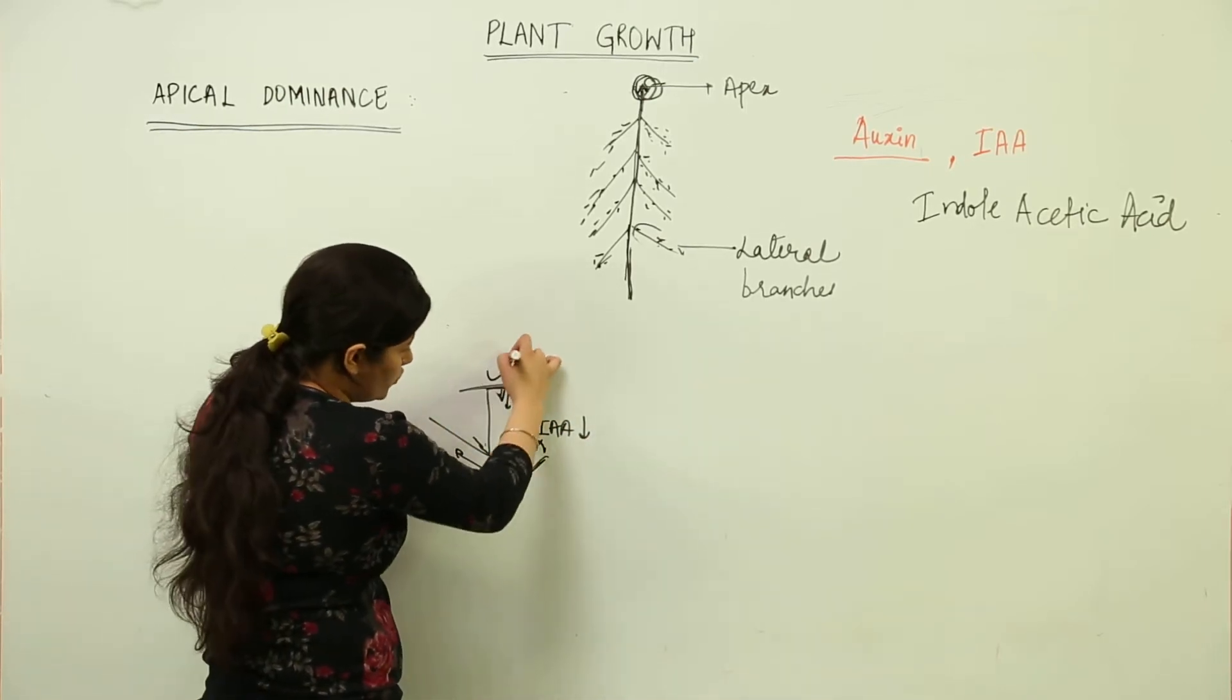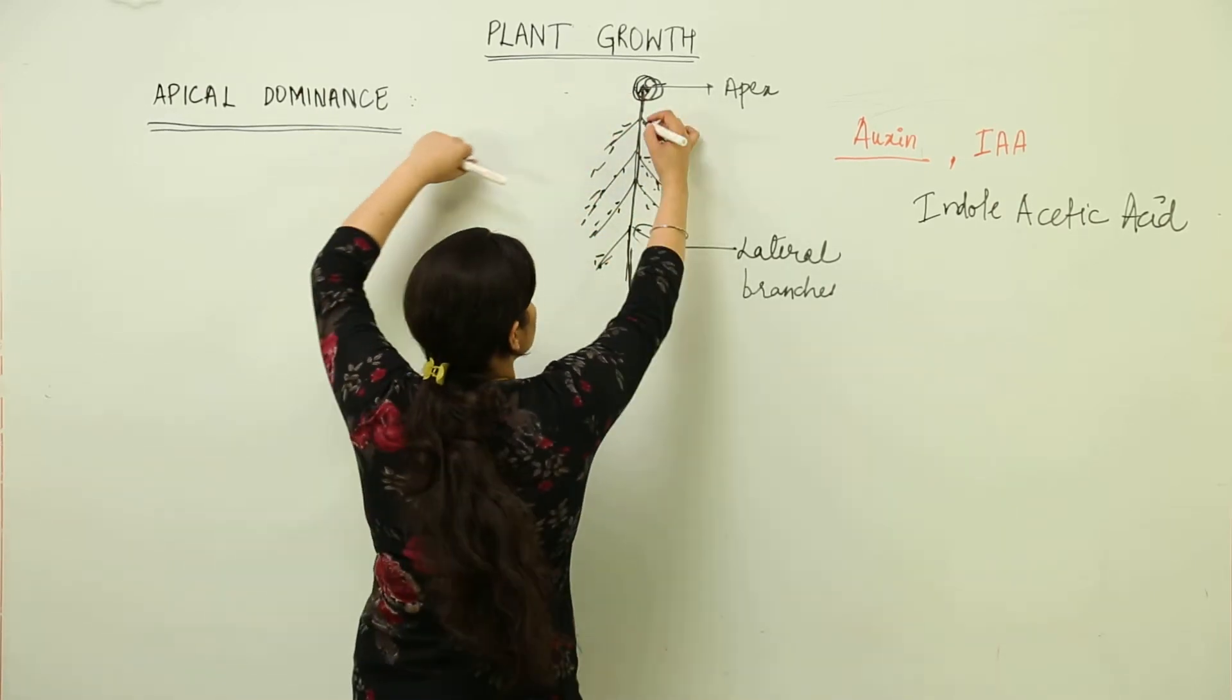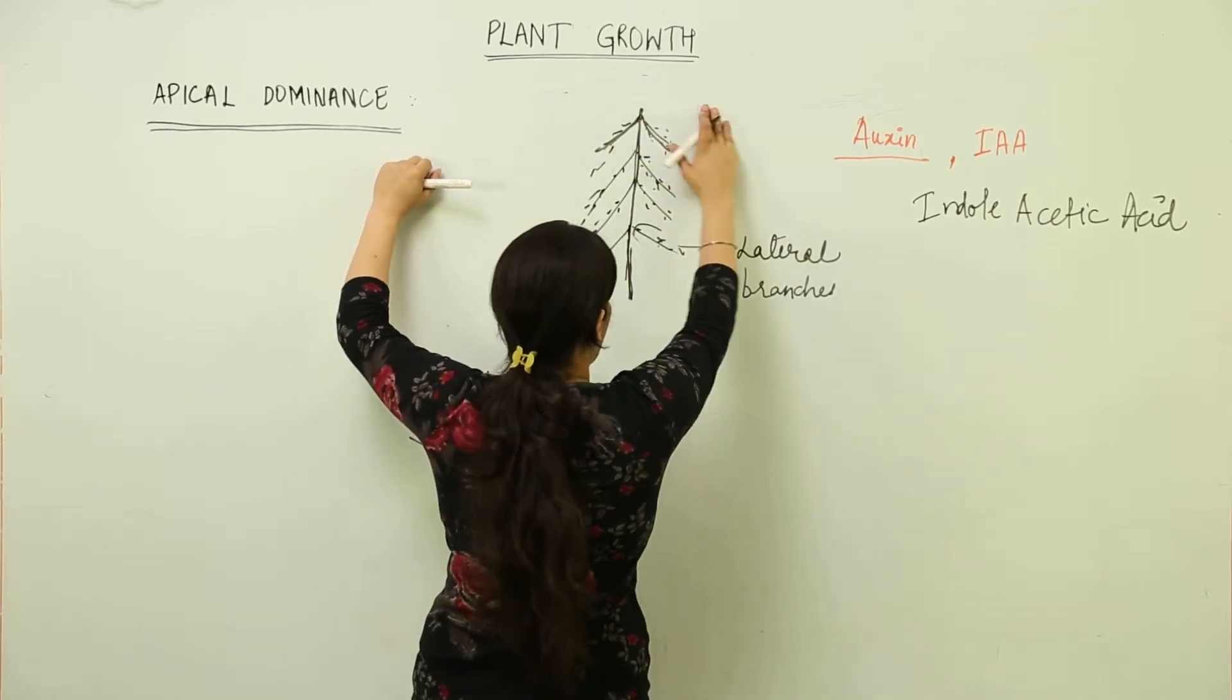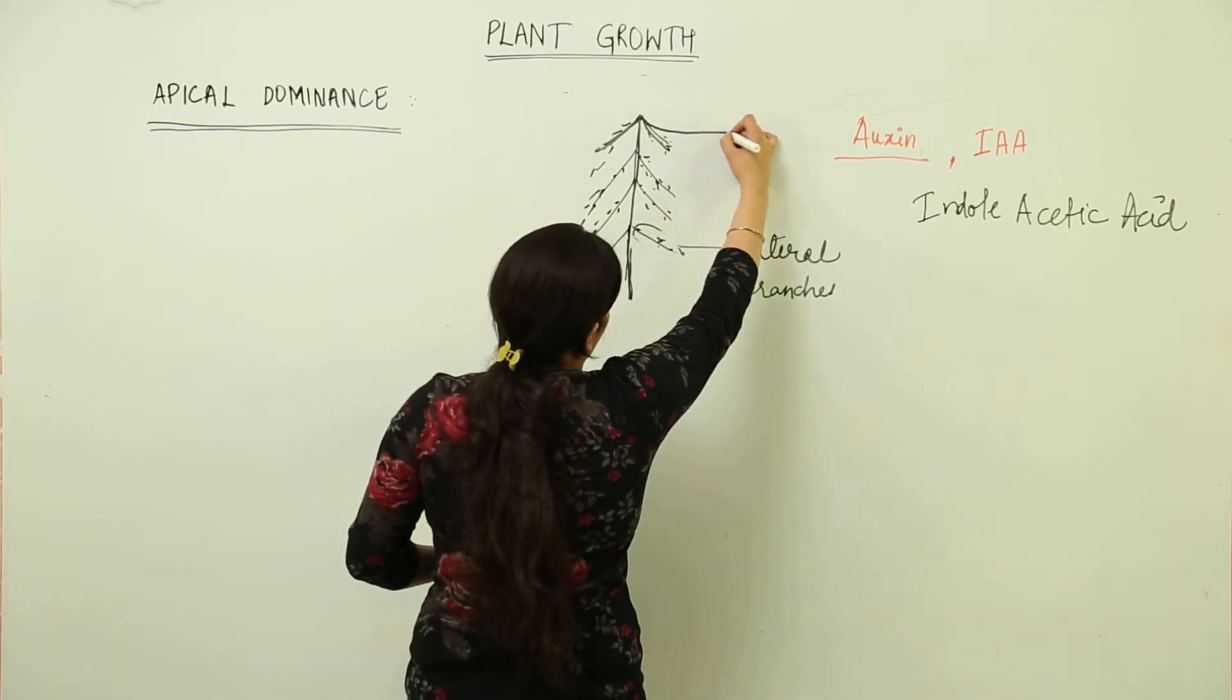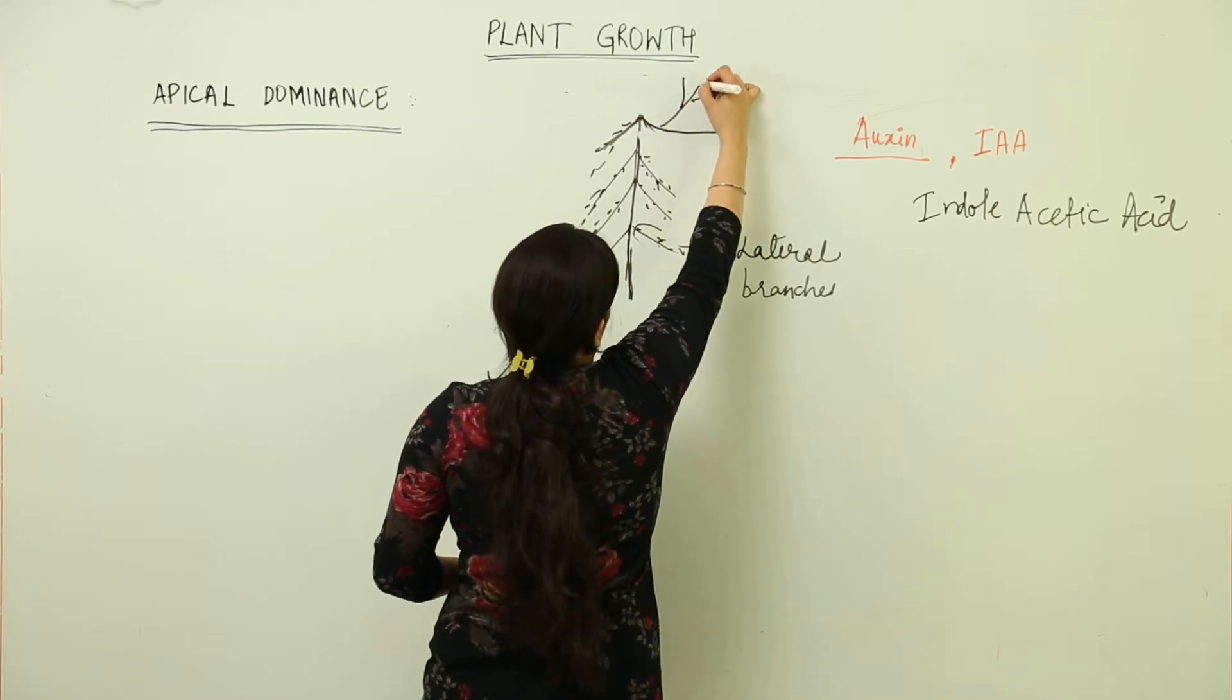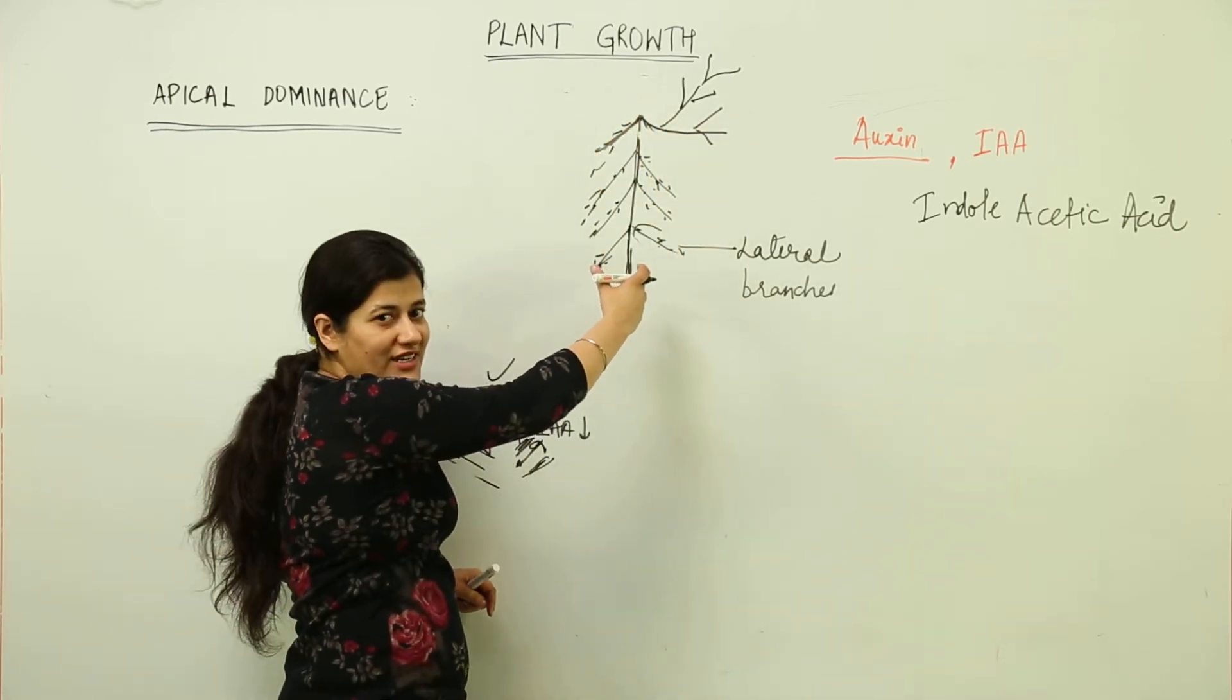This axillary bud is going to show the apical dominance and try to overtake the shoot - any of these lateral branches. Now consider this plant itself, this Christmas tree that we took into scene. Supposedly the apex has been removed. If you have ever observed in conifers, one of the lateral branches would try to show the apical dominance, and then they would take on the lateral branching.